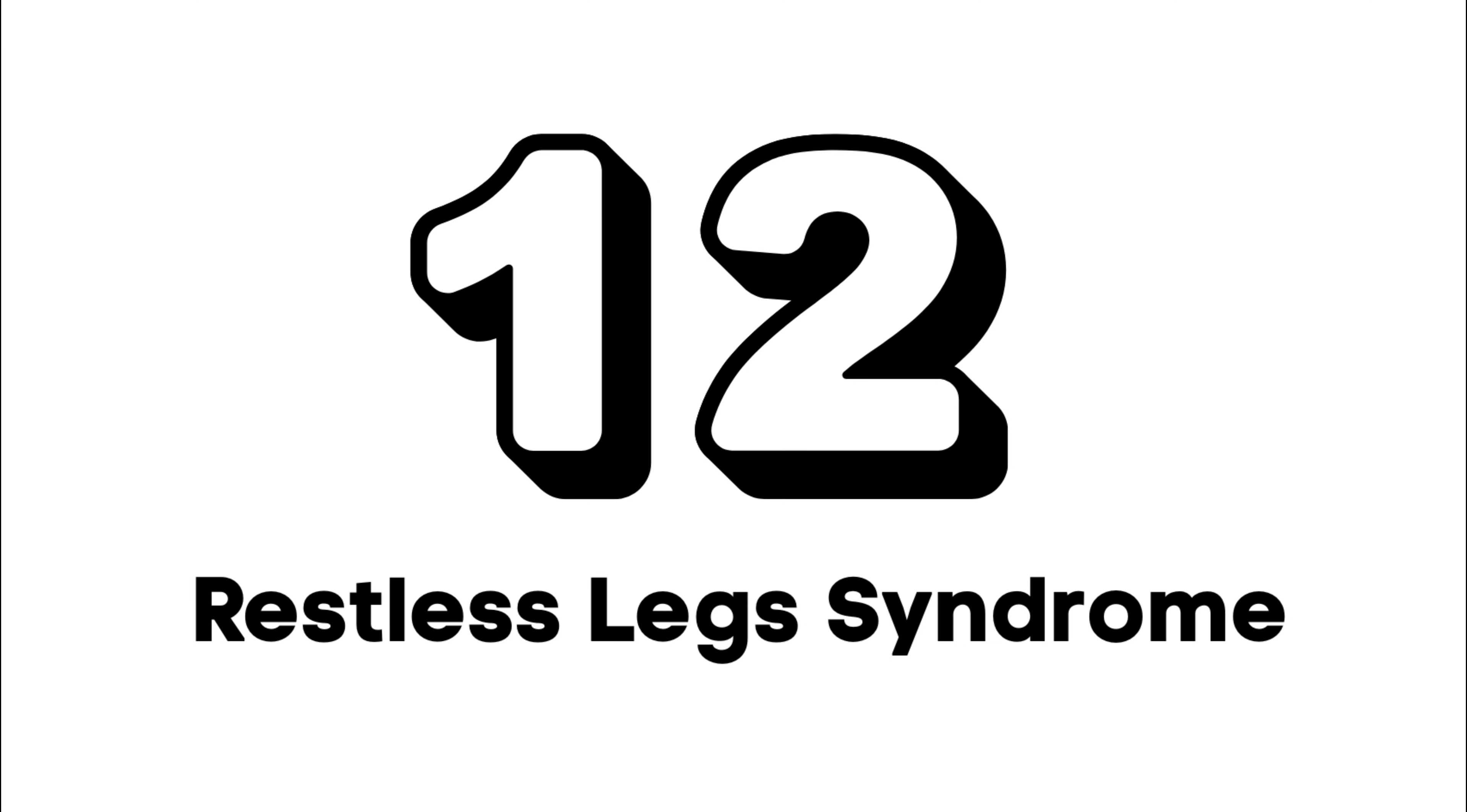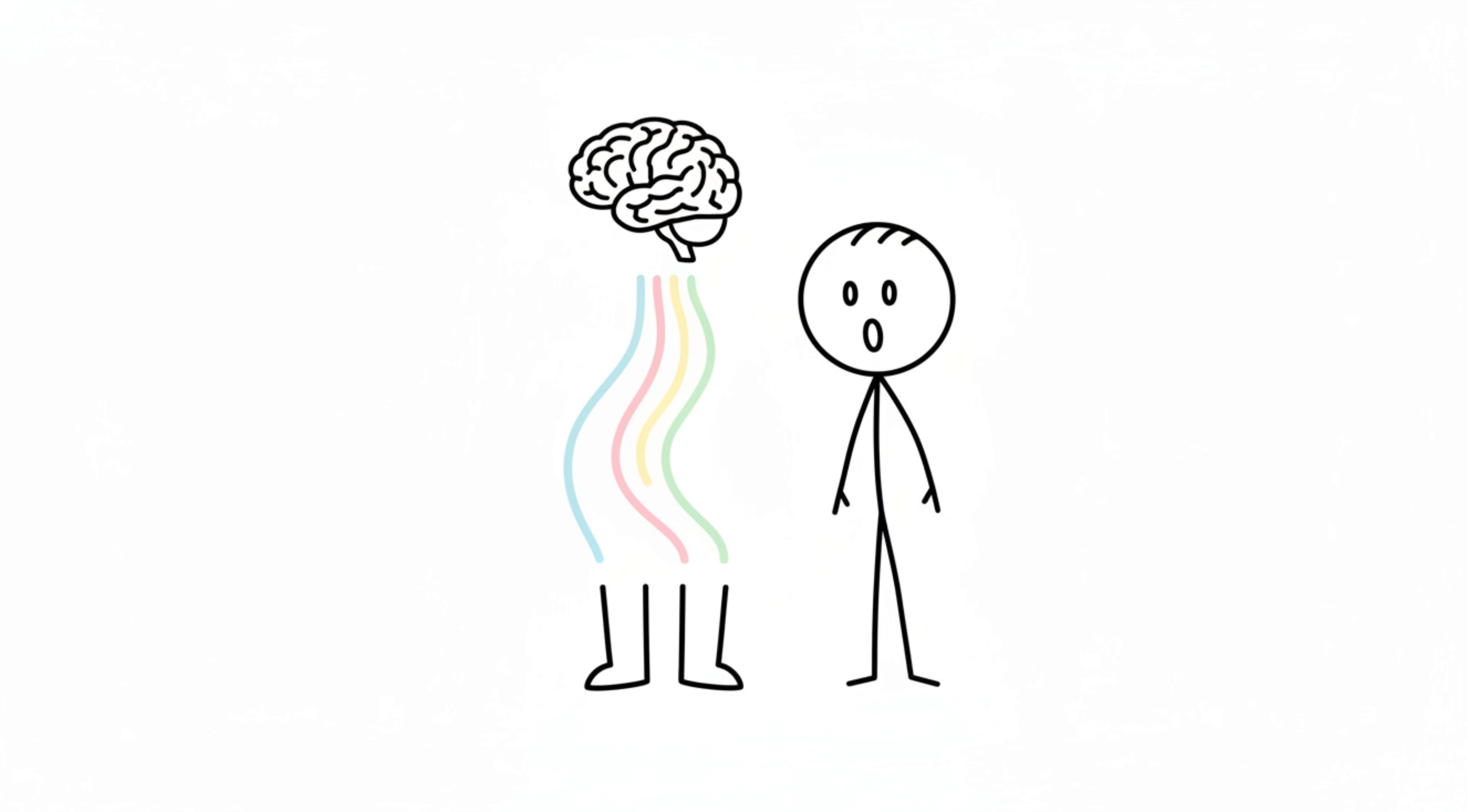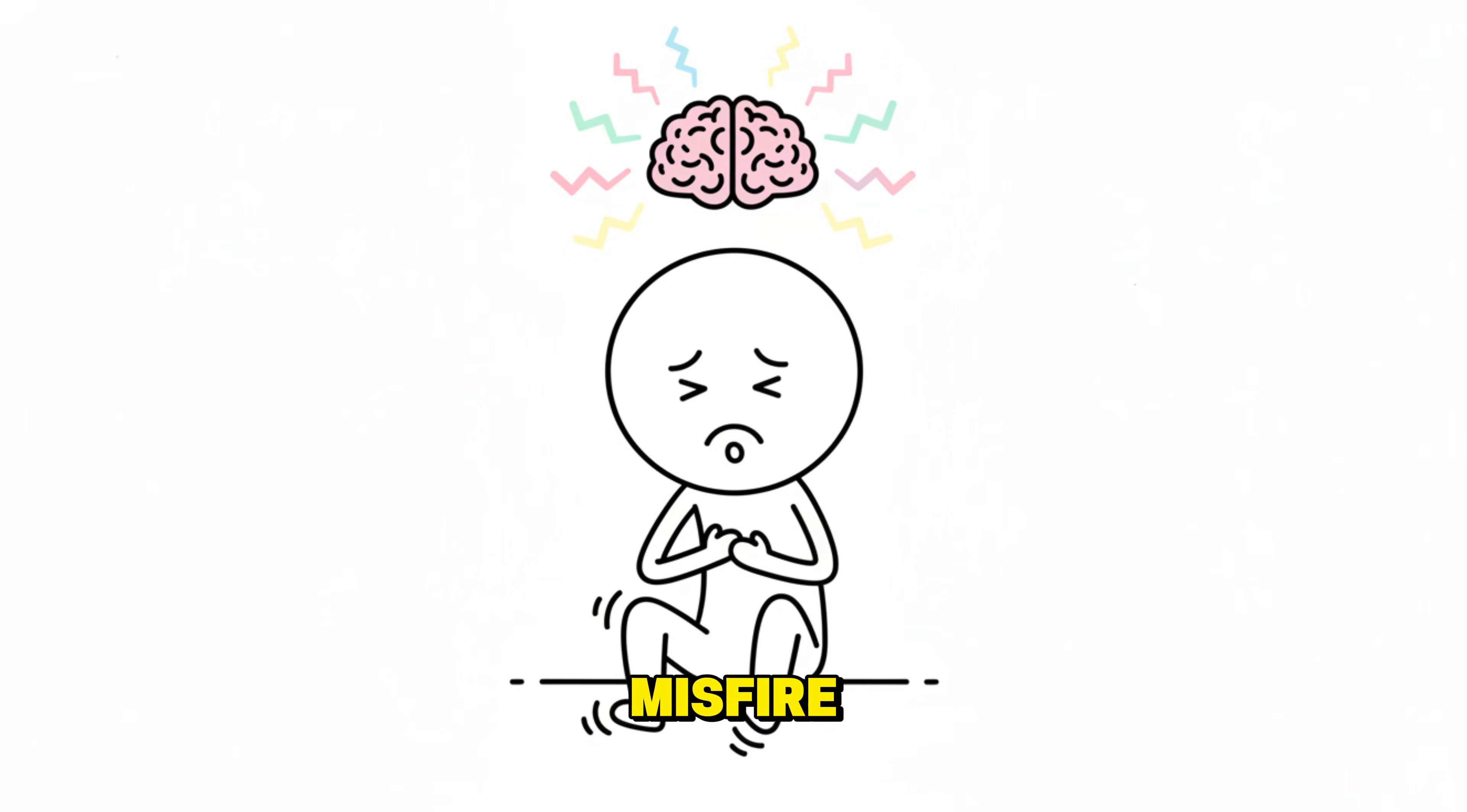Restless Leg Syndrome. You try to rest, but your legs feel electric, itchy, or pulled from the inside. This is RLS, deeply connected to the brain's dopamine pathways. The system that regulates impulses and movement. When dopamine signals misfire, your body interprets stillness as discomfort.